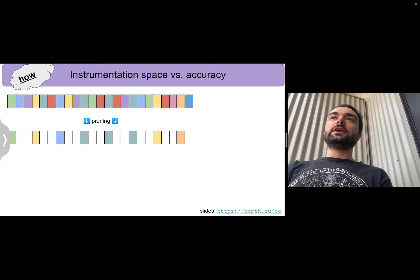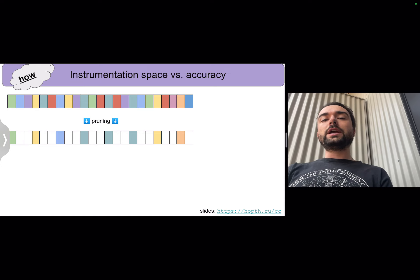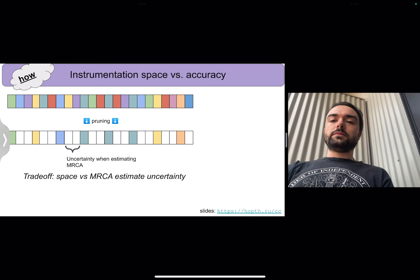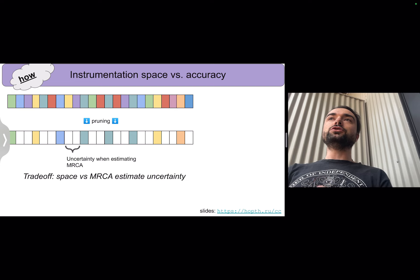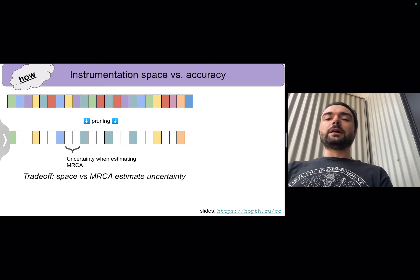The solution to this is to perform pruning on the fingerprints, to throw some of them away, which introduces a trade-off between the accuracy and resolution to which we can reconstruct phylogenetic events and the space that these annotations are taking up.